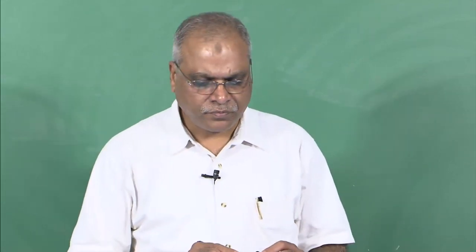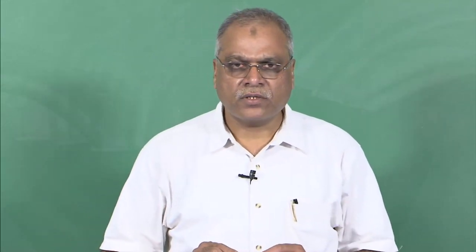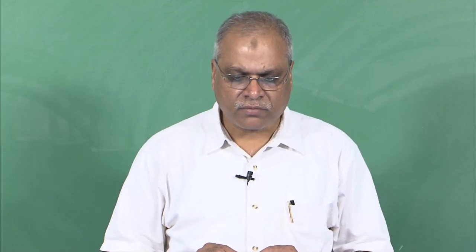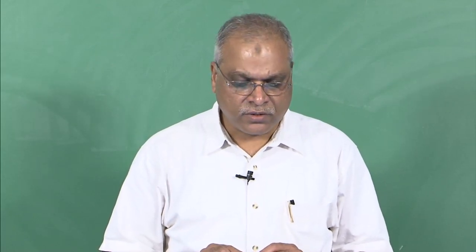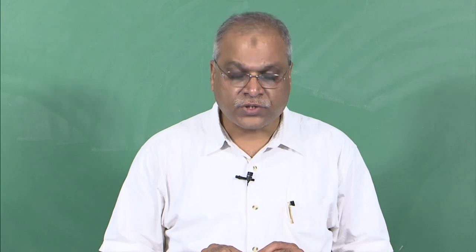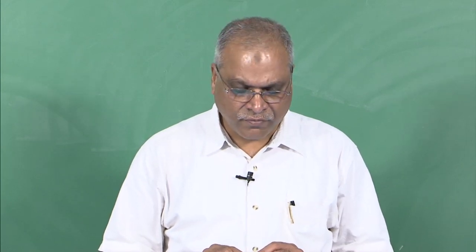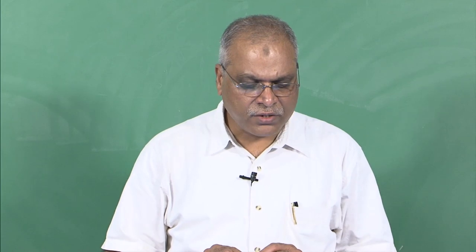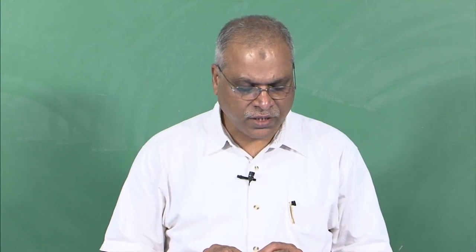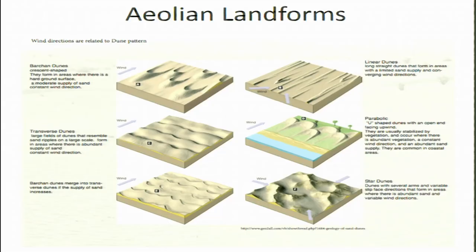These are a few shapes or forms of aeolian landforms which are commonly observed: Barkhan dunes, transverse dunes, star dunes, parabolic dunes, and linear dunes. All these landforms, as I mentioned, are the product of wind action.